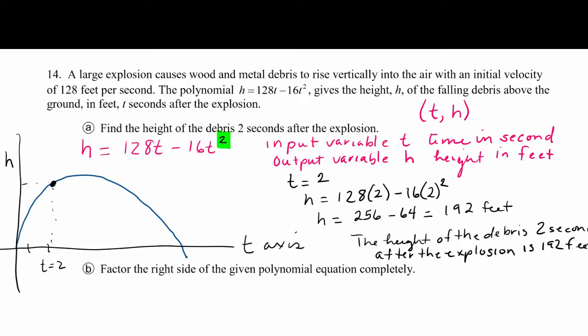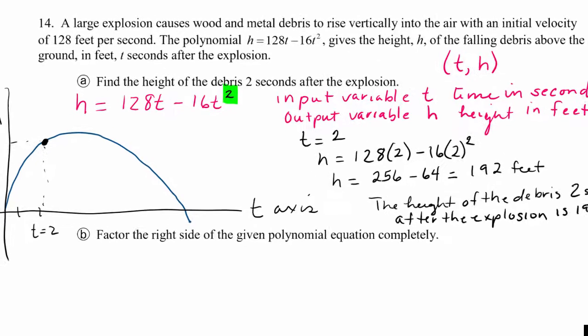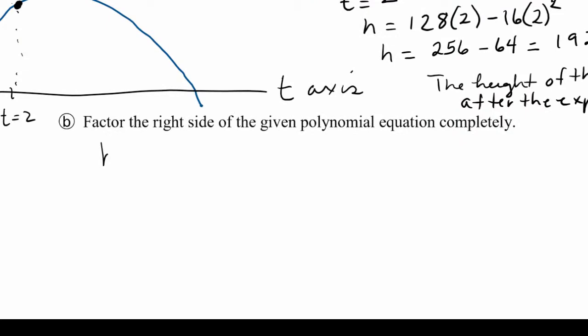In part b, they want us to factor the right side of the given polynomial equation completely. So here we go. We have h = 128t - 16t². And they want us to factor this. So do you see a GCF there? Yes, 16t. Matter of fact, notice how our t² is negative.